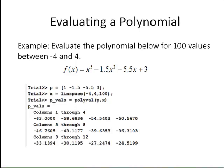The polynomial is f of x equals x cubed minus 1.5x squared minus 5.5x plus 3. The commands to do that are first, we're going to define the coefficient vector. Then I'll use the LINSPACE function to create 100 equally spaced values between negative 4 and 4. Go back to the vector operations video or use the help function in MATLAB if you don't recall the LINSPACE function.